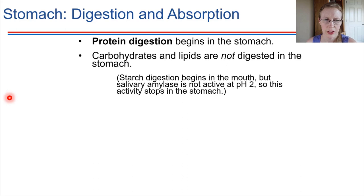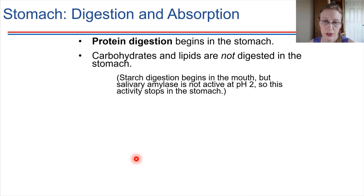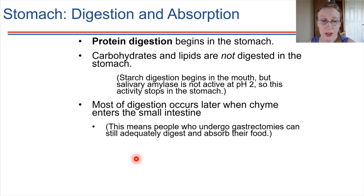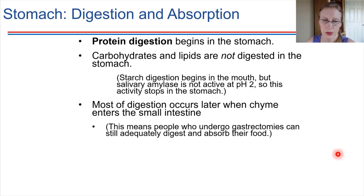As far as digestion goes, there's not really a whole lot taking place in the stomach — just proteins. Carbohydrates and lipids are not digested in the stomach; they just hang out until later in the digestive tract. Most digestion takes place in the small intestine. Interestingly, people who have their stomachs removed — a gastrectomy — can still digest and absorb nutrients from food without much trouble, with some modifications to their dietary needs, because the small intestine is the key place where digestion happens.